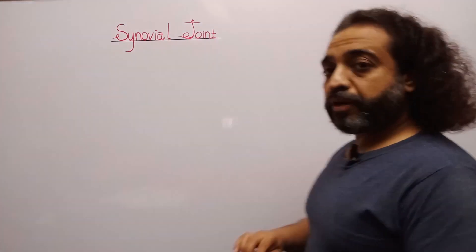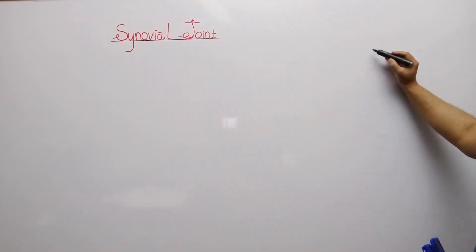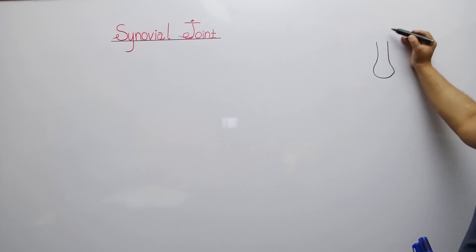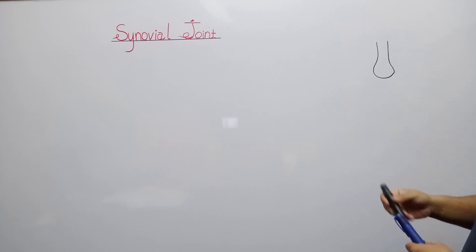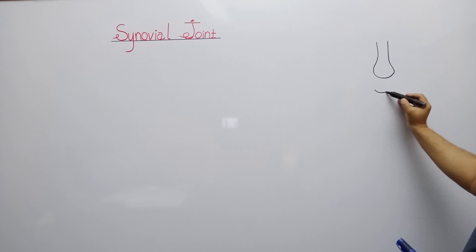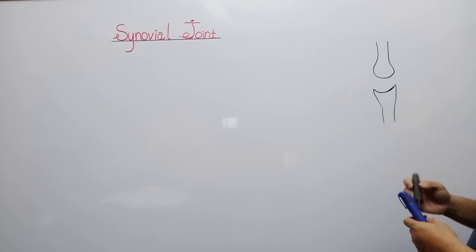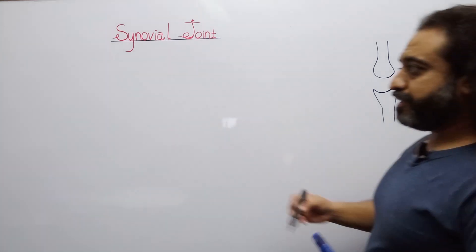So let's have a start. We have drawn a joint which is called a synovial joint. Look here, here is a bone and here is another bone. Synovial joints have three basic needs or requirements.